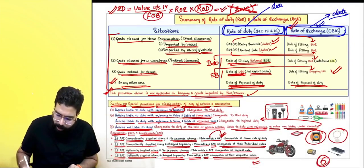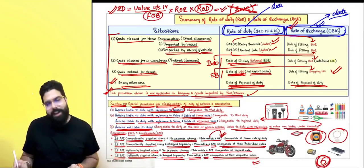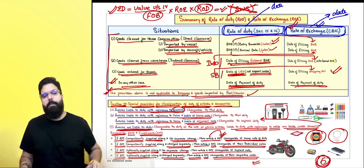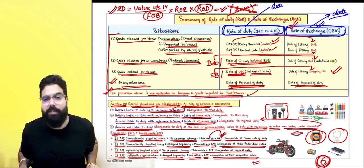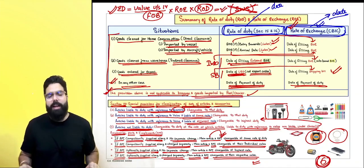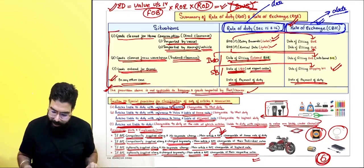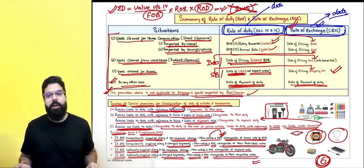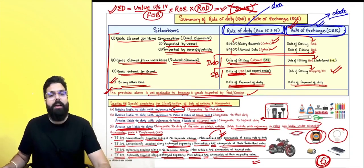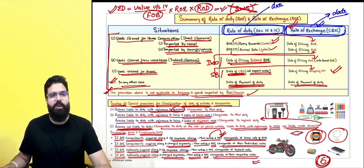This concludes the revision of valuation under customs. This is a very important chapter — a six-mark question is almost certain to appear in the exam.